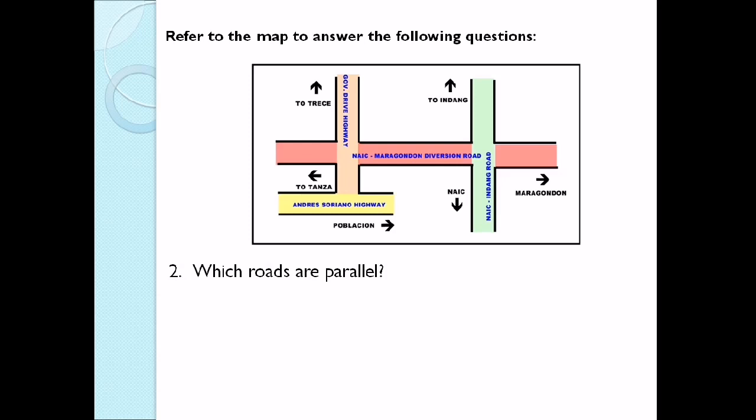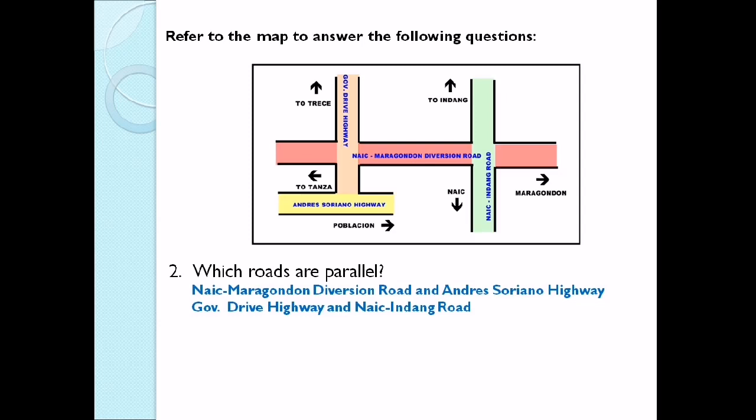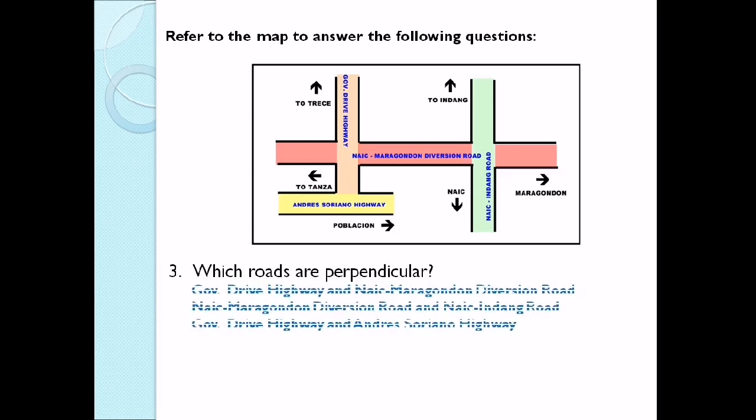Number 2: Which roads are parallel? Naikmaragondon Diversion Road is parallel with Andres Soriano Highway. Governor Drive Highway is parallel with Naikindang Road. Number 3: Which roads are perpendicular? Governor Drive Highway is perpendicular with Naikmaragondon Diversion Road. Naikmaragondon Diversion Road is perpendicular with Naikindang Road. Governor Drive Highway is perpendicular with Andres Soriano Highway.